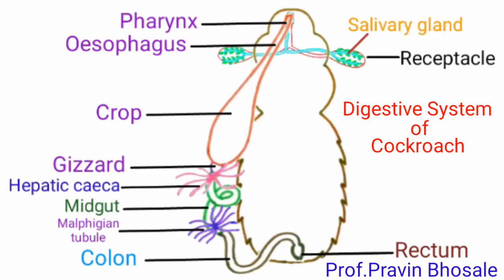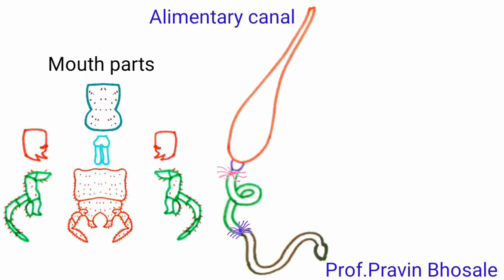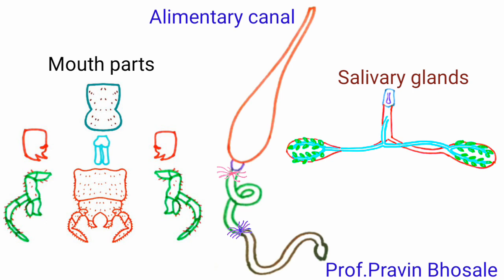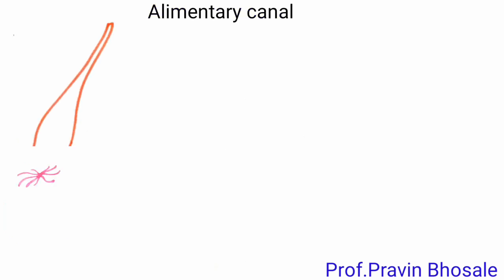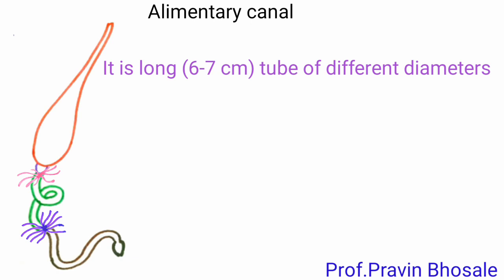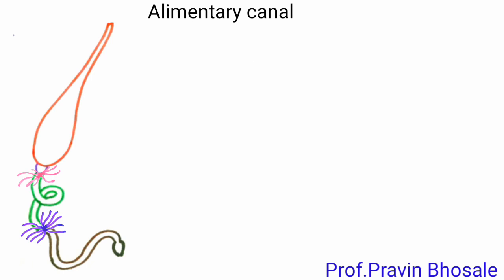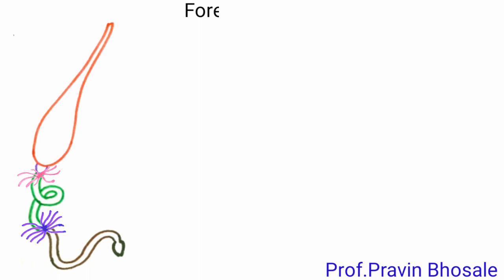Hello students, today we will revise about the digestive system of cockroach. It consists of mouth parts, alimentary canal, and salivary glands. The alimentary canal is a long, six to seven centimeter tube of different diameter and two openings. It is divisible into three parts: foregut, midgut, and hindgut.